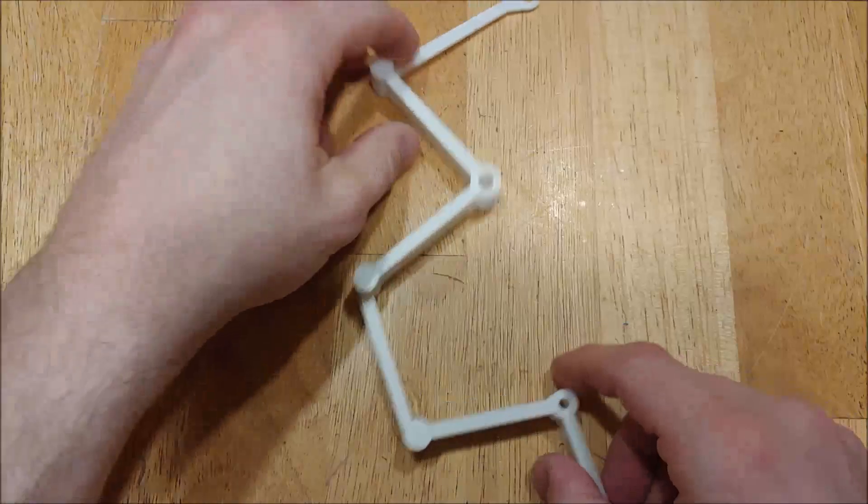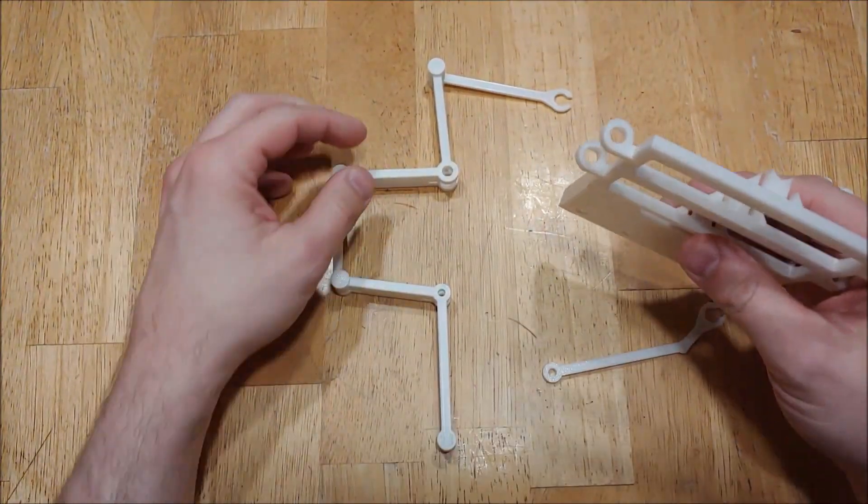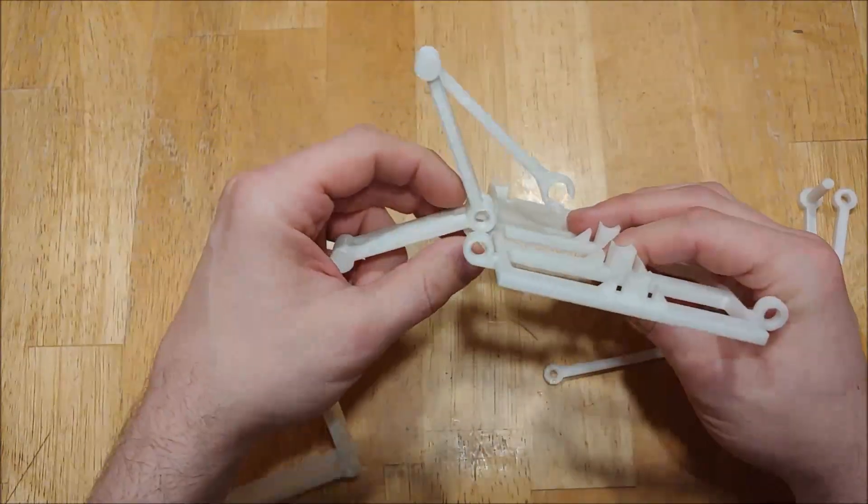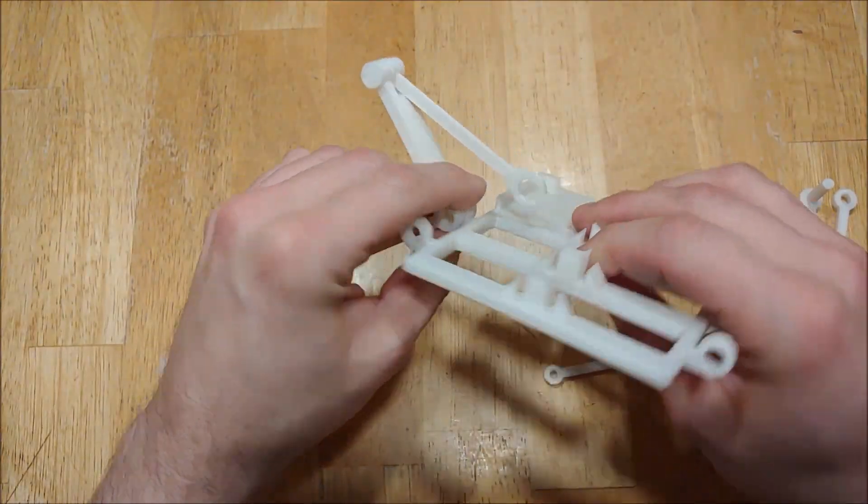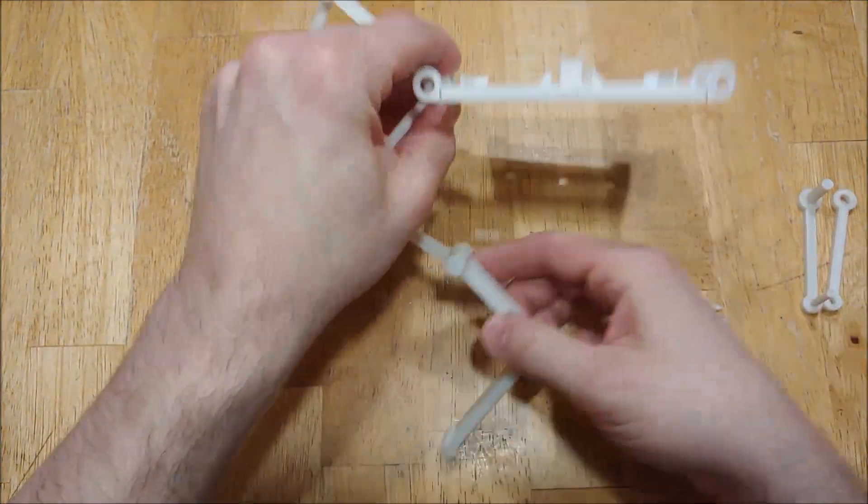So all these pieces are nice and loose. This is where it starts to get a little bit tricky. What you have to do is hold this in place, like with the joint in there, while you put the rest of it together.